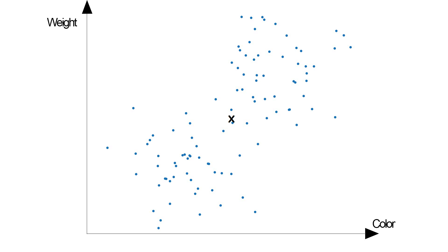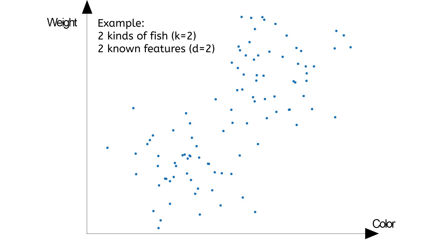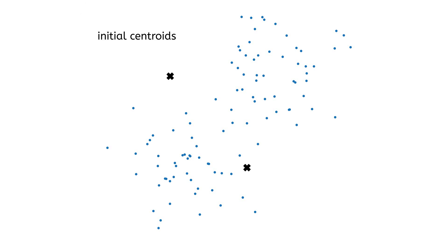But in our case, k is equal to two. That makes the calculation a bit more complicated and we have to solve it iteratively. At first we have to pick initial points, which are probably not the means yet, but for the moment we treat them as such. These initial centroids can be picked randomly.